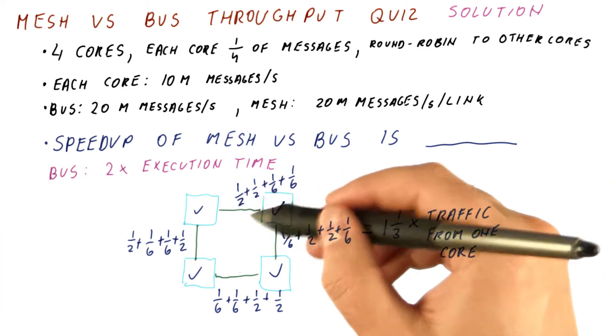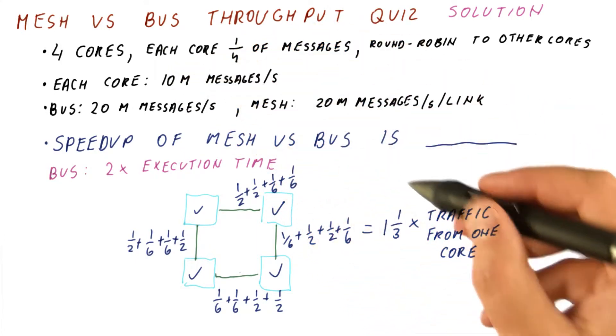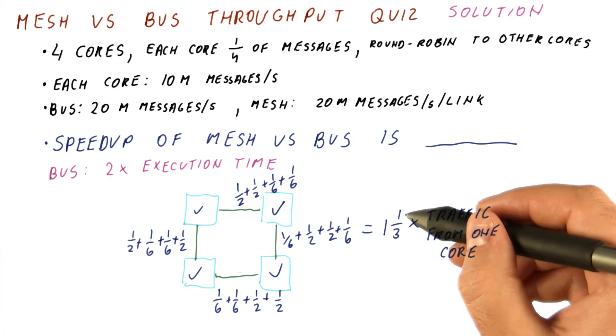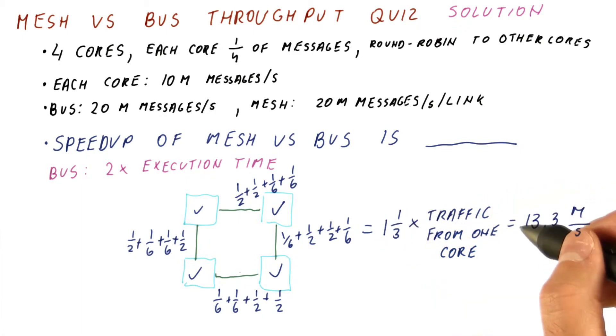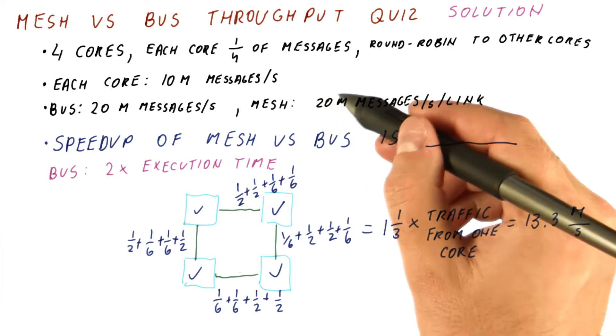The traffic from one core is 10 million messages a second. So we're really getting 10 plus 3.3. So this is 13.3 million messages per second, which is available on our mesh.